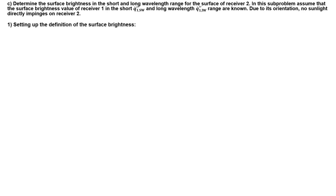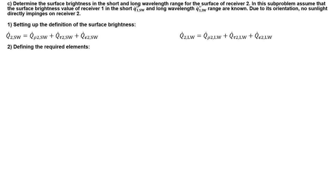In the third task, we are asked to determine the surface brightness in the short and long wavelength range for the surface of receiver 2. We can assume the surface brightness of receiver 1 in both wavelength ranges is known, and due to its orientation, no sunlight directly impinges on receiver 2. We write out the general definition of the surface brightness for both wavelength ranges, which yields from the radiation being reflected, transmitted, and emitted. For the reflection term, receiver 2 can only receive radiation from receiver 1, so some of that radiation is reflected. The radiation received by receiver 2 from receiver 1 yields from the product of the view factor from 1 to 2 multiplied by the surface brightness of receiver 1.